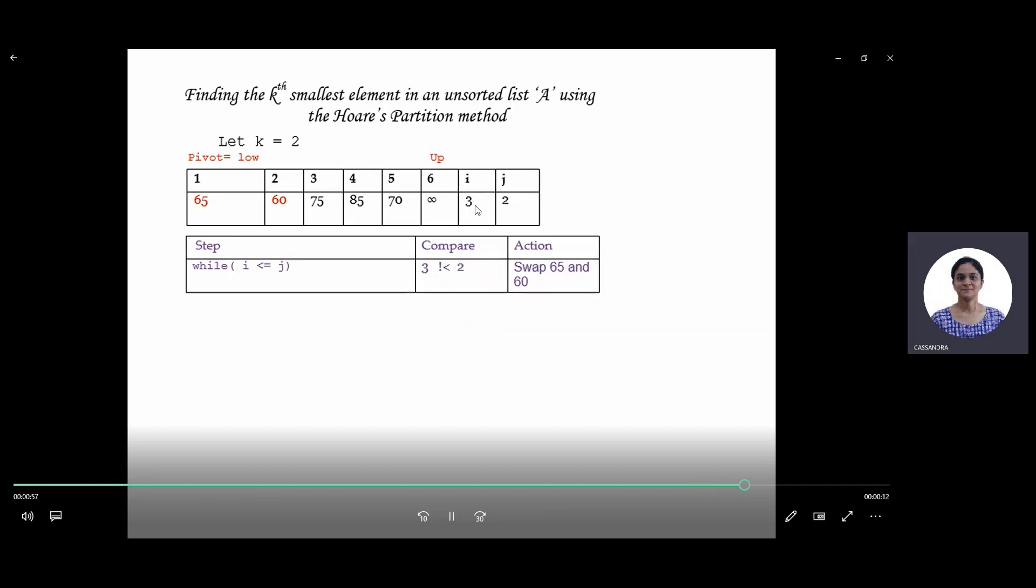So j is 2 and i is 3. j has become less than i, so we stop and interchange the values of j with the pivot.